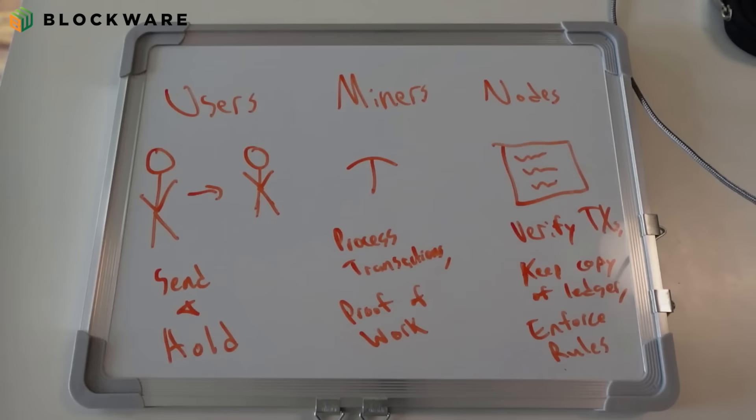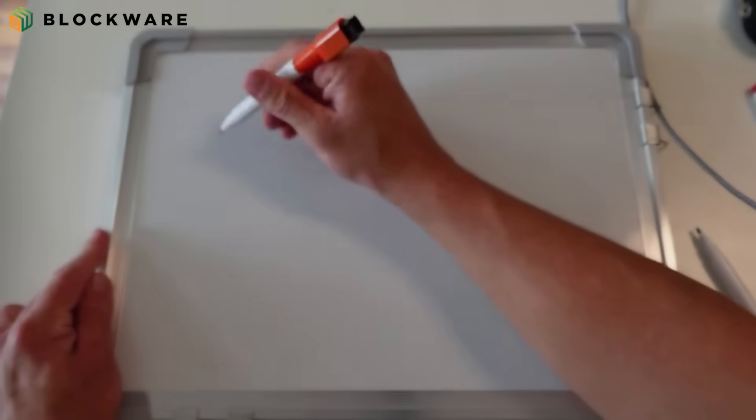The synergy between users, miners, and nodes is what makes Bitcoin a robust and secure system. Users benefit from a decentralized currency that is not controlled by any government or institution. Miners are rewarded for their contribution to the network security, and nodes ensure that all transactions adhere to the rules, preserving the integrity of the blockchain in the Bitcoin monetary system.